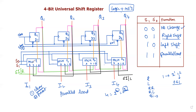The selection inputs are S0 and S1. When the selection inputs are 0-0, that corresponds to input number 0 of the multiplexer, giving the no-change operation. For no-change, the previous data remains the same — the output stays the same as the input data. So with selection inputs 0-0, no-change means the same data is preserved at the output.